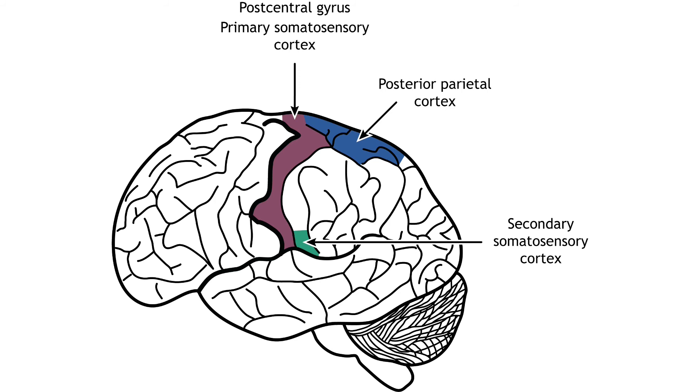This region, like the dorsal stream of visual processing, is responsible for object recognition, discerning texture, shape, and size. The secondary somatosensory cortex also has receptive fields that represent bilateral regions of the body, so both hemispheres will be activated by touch on either side of the body.